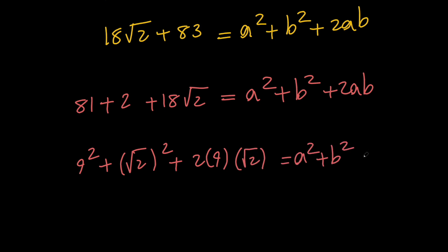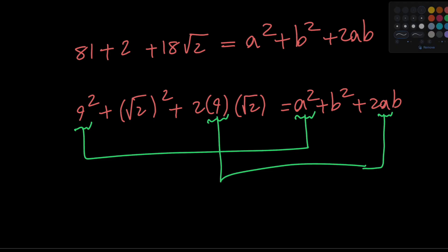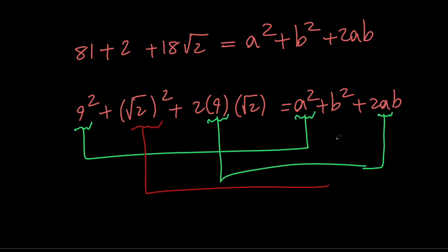Now if we go ahead and compare both sides we can see that 9 squared is the same thing as a squared which indicates that 9 is a and root 2 squared is b squared which indicates that root 2 is b.